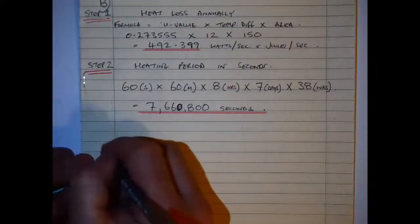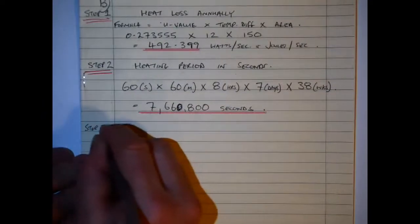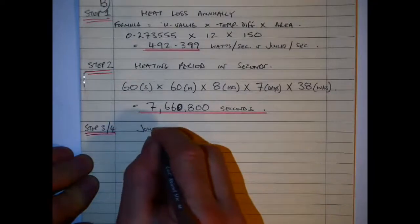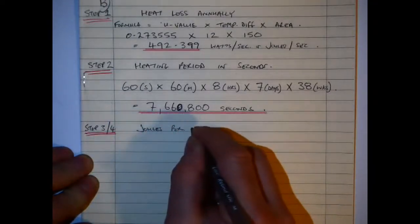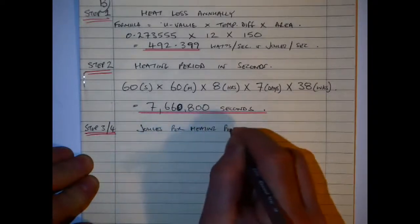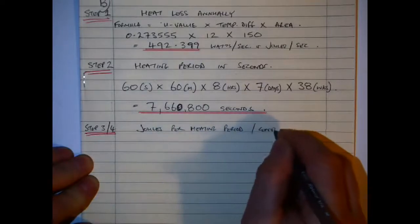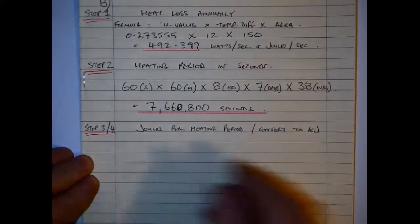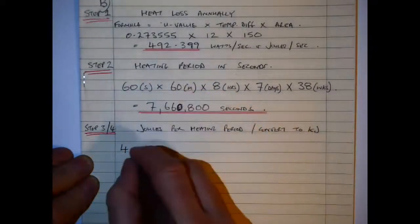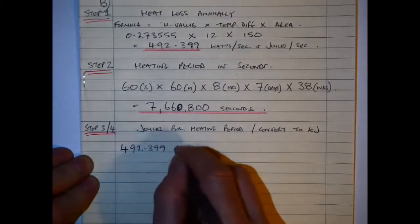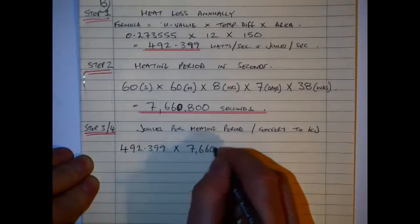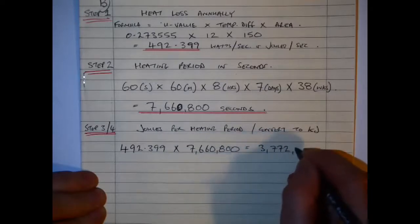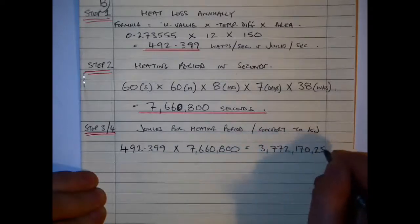Step 3: we're going to use those first two figures to get the joules per heating period. I have steps 3 and 4 listed here — first we get the joules per heating period and then we convert to kilojoules. So I take my 492.399 joules per second and multiply it by 7,660,800 seconds. Using a calculator this is very straightforward; then we take that figure and divide by 1,000 to convert to kilojoules.